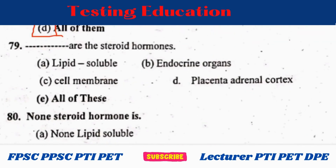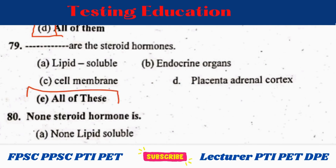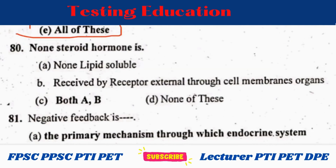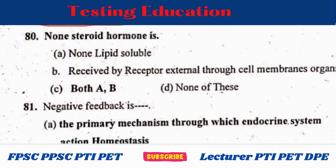The steroid hormones are lipid soluble, produced by endocrine organs, act through cell membrane receptors, include placenta, adrenaline, and cortex — all of these. Non-steroid hormones are non-lipid soluble and are received by receptors internal to the cell membrane. Both options A and B are correct for non-steroid hormones.